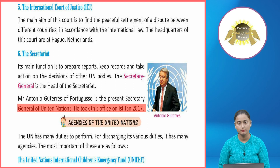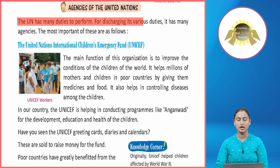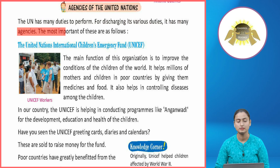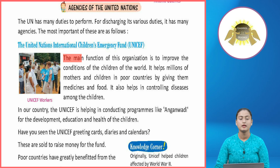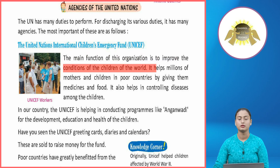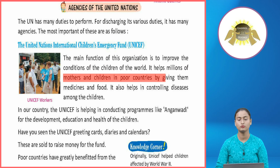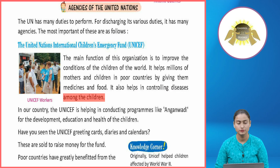The UN has many duties to perform, and for discharging its various duties it has many agencies. The most important of these are: UNICEF (United Nations International Children's Emergency Fund). The main function of UNICEF is to improve the conditions of children of the world. It helps millions of mothers and children in poor countries by giving them medicines and food. It also helps in controlling diseases among children.